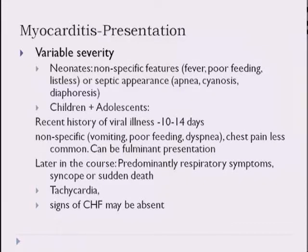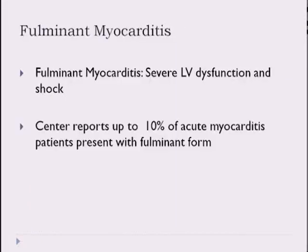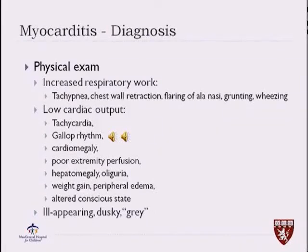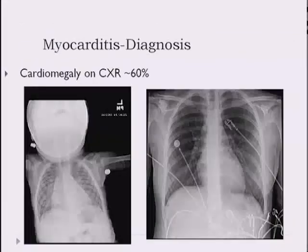Usually tachycardia is present, but signs of heart failure can be absent. We coined the term fulminant myocarditis to refer to severe left ventricular dysfunction and shock. Some centers report that up to 10% of patients presenting with acute myocarditis have the fulminant form. On physical exam, they have increased respiratory work, signs of low cardiac output with tachycardia, a gallop rhythm either S3 or S4, cardiomegaly on exam, poor extremity perfusion, oliguria, and weight gain. Briefly, they are ill-appearing, dusky and gray, as if they are going to arrest in front of you.